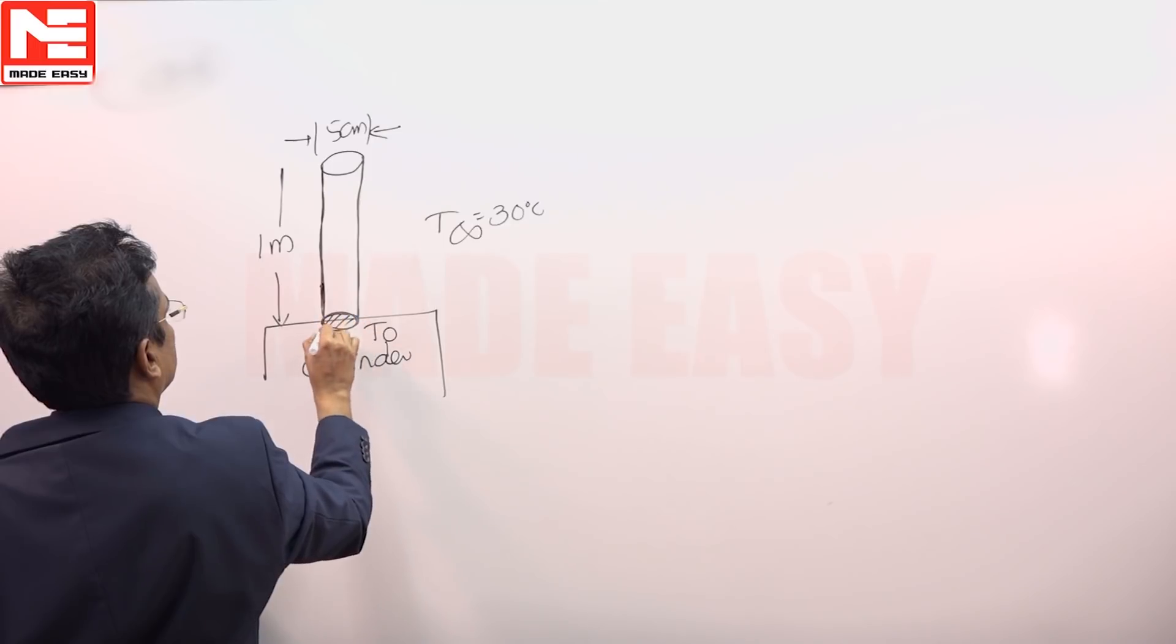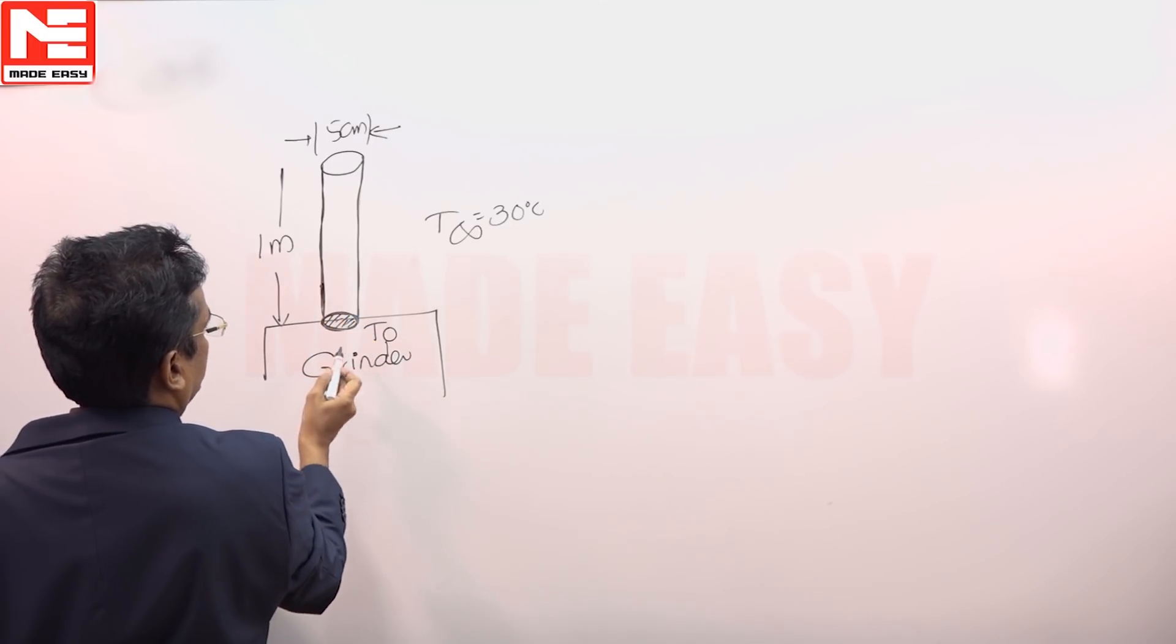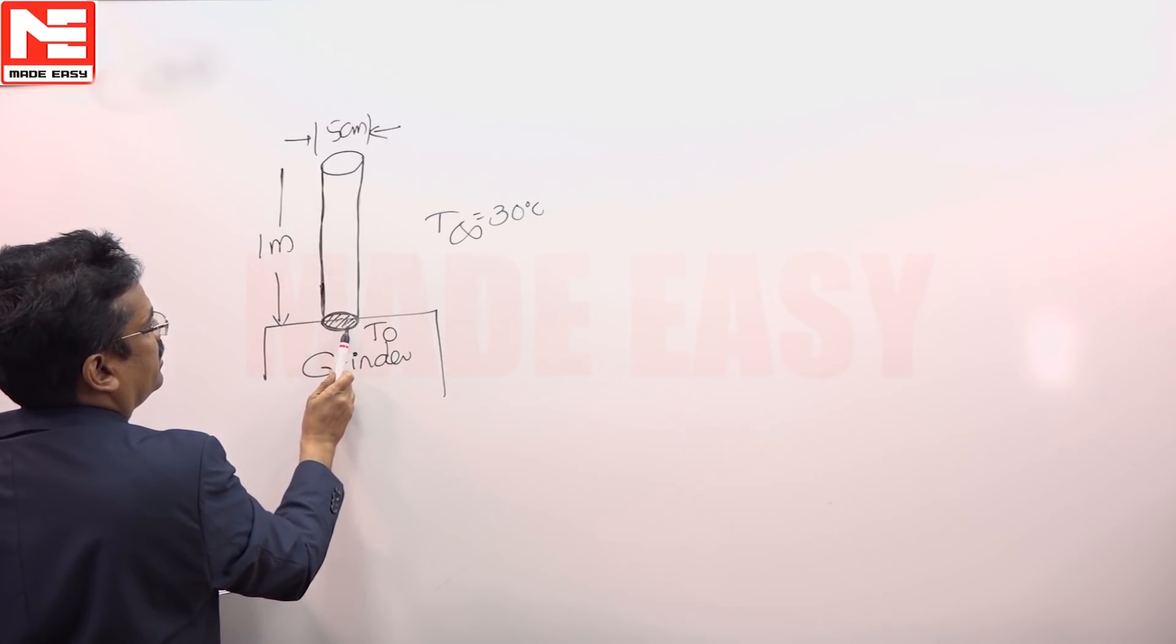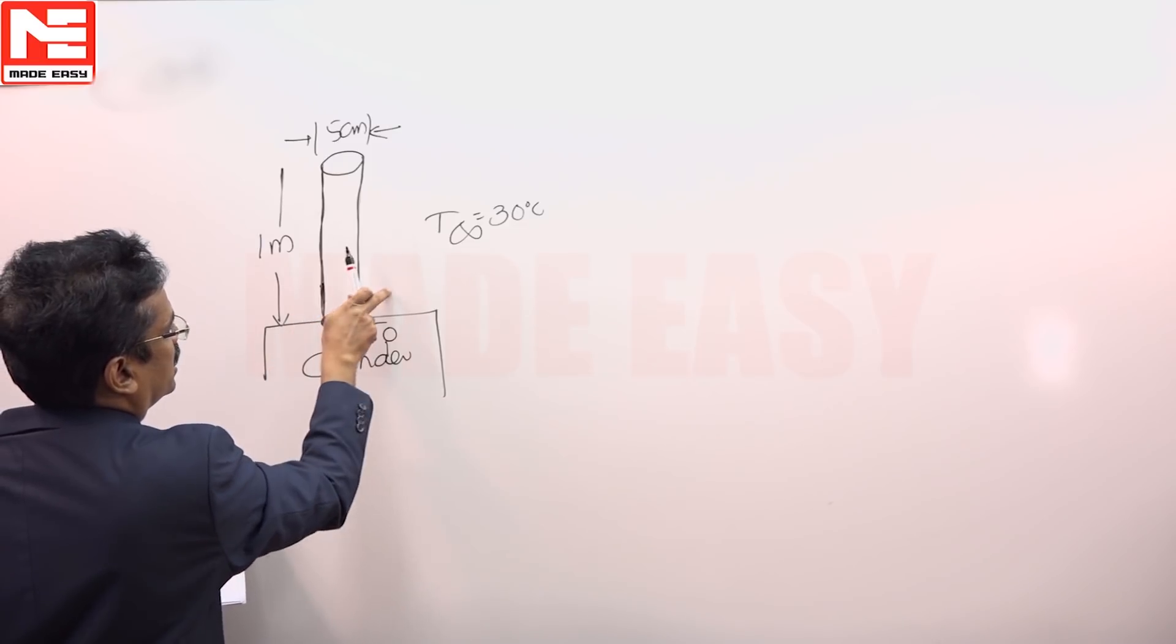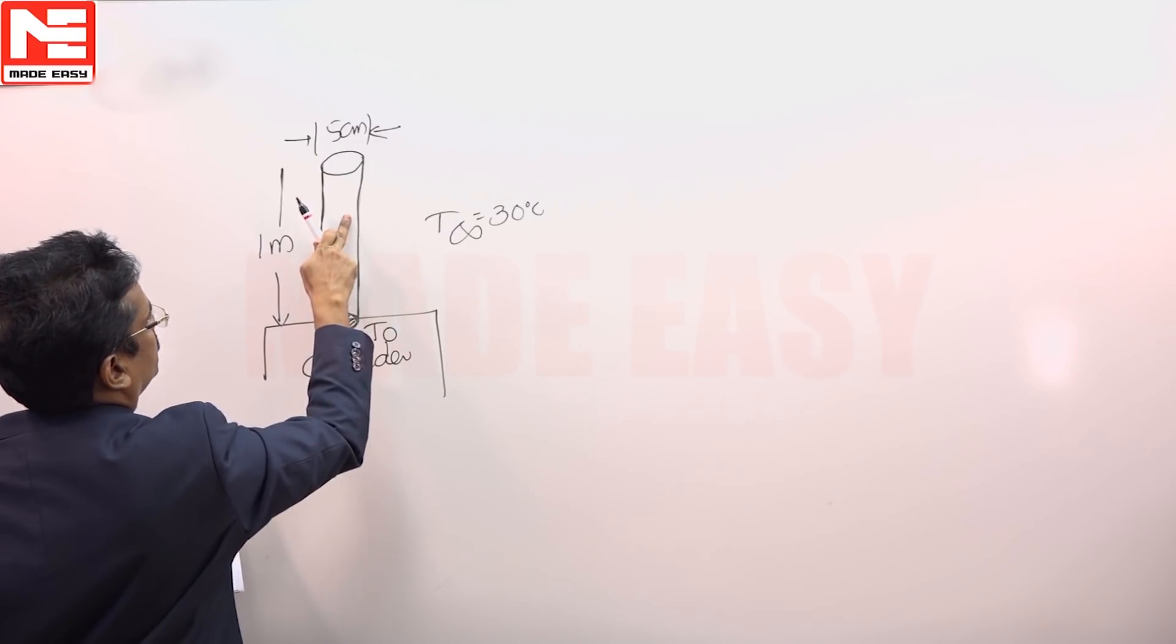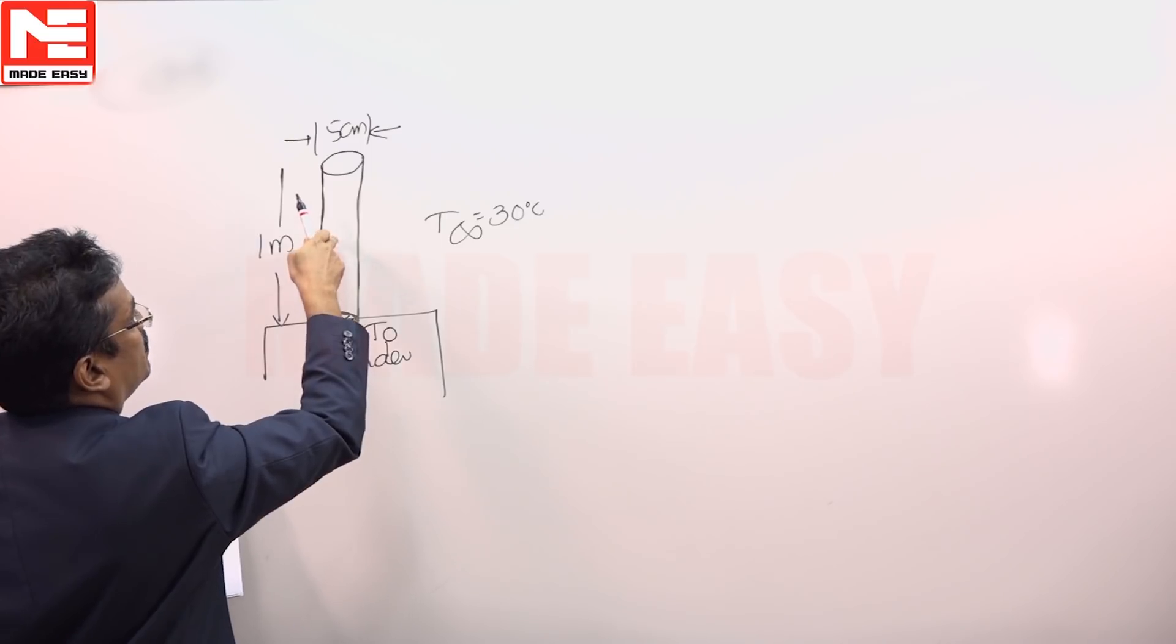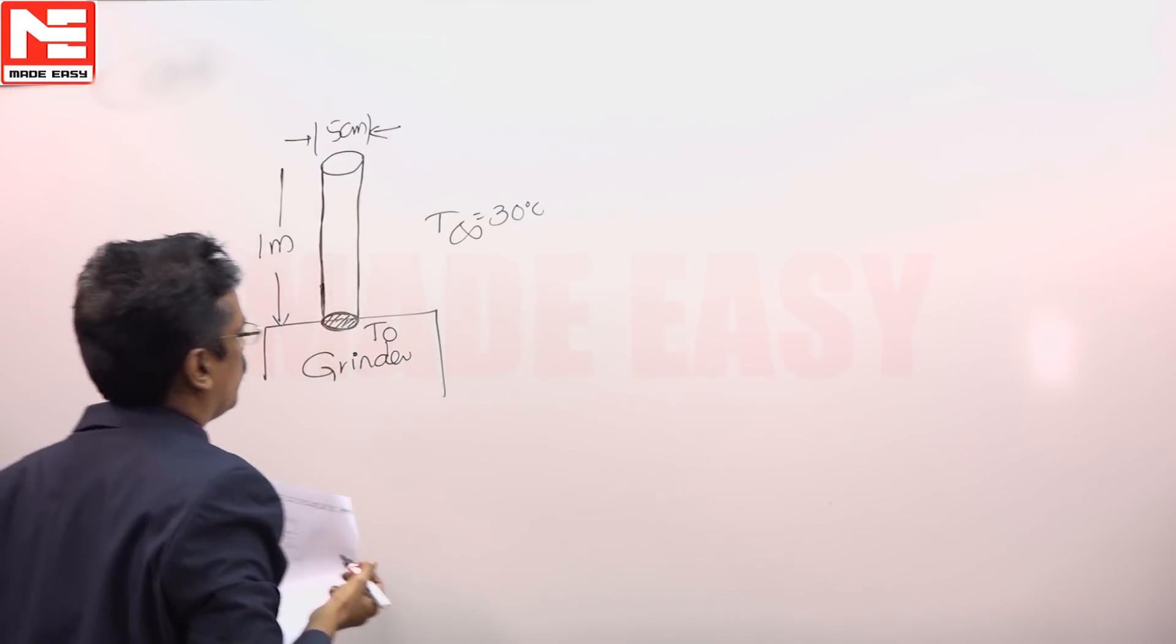The grinding performance is done at the other end of the rod where the heat is being generated. Whenever this end of the rod is being grinded, there will be mechanical power being dissipated into heat energy. That mechanical energy which gets converted into heat will get dissipated through the rod. The rod can be assumed as a fin, a pin fin having a diameter as 5 centimeters and length as 1 meter.